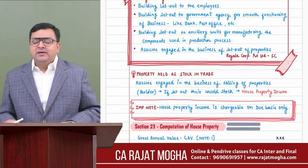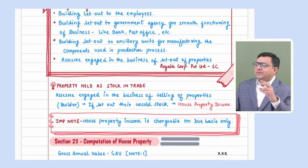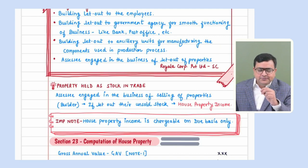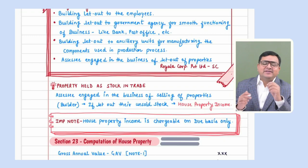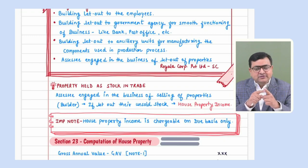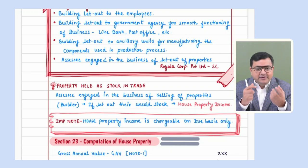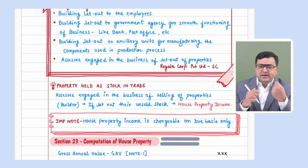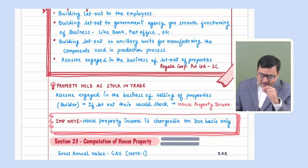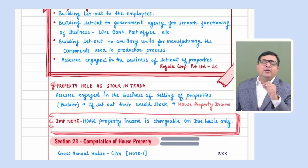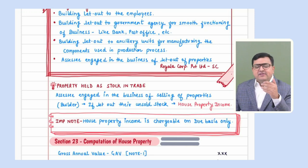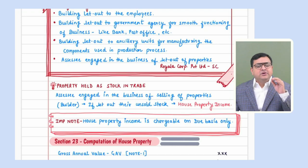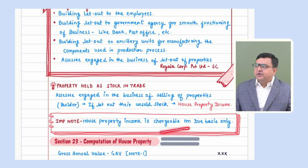Very important note: house property income will be taxable only on due basis. Remember in salary, we discussed that salary could be taxed on due basis or receipt basis, whichever is earlier. But here, please note that house property income will be taxable only and only on due basis. Even if you have received rent in advance, please don't tax that rent in advance. It will be taxed only when it is due.